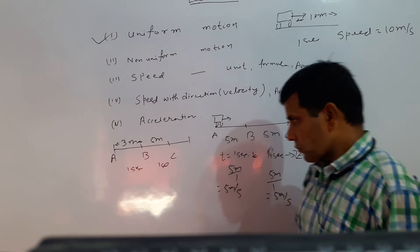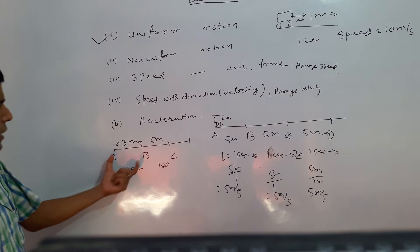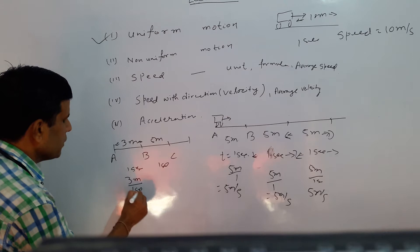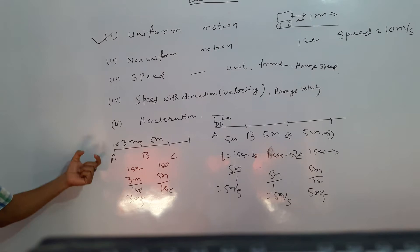In the case of non-uniform motion, we already know that every interval has unequal distance traveled. This means the speed is not constant in every interval. For this case: from A to B, speed is 3 meters per second; B to C speed is 5 meters per second. So in non-uniform motion, every interval the speed is different.